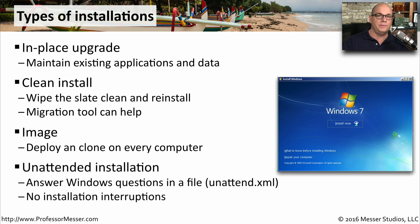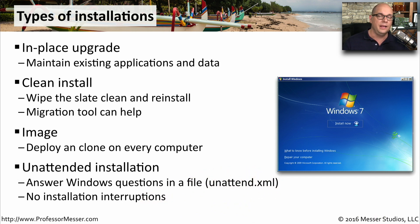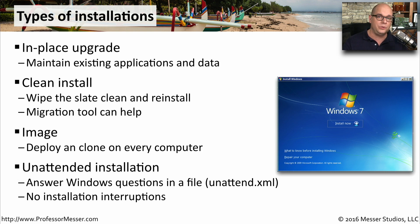In some cases, though, you have different kinds of hardware and you want some flexibility in how the Windows configuration might be installed. In those cases, you can create an unattended installation. This is where you can create a file called unattend.xml. This file is going to have all of the answers to the questions that are normally asked during the installation process. You add that XML file to your installation media, then all you have to do is simply turn on the computer with that installation media, and it performs the entire install without any user intervention.